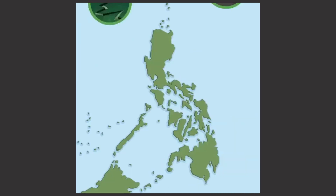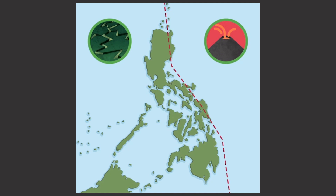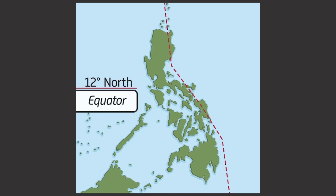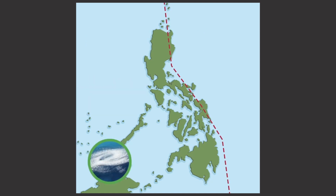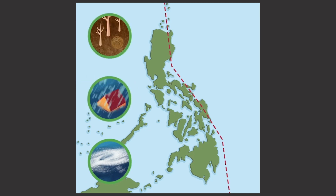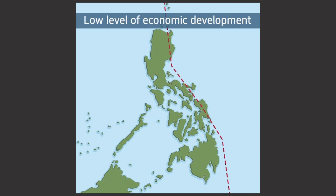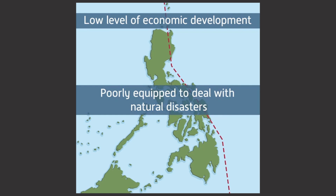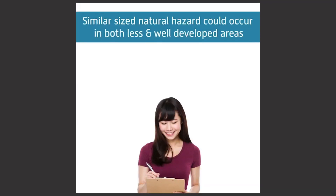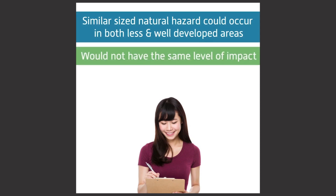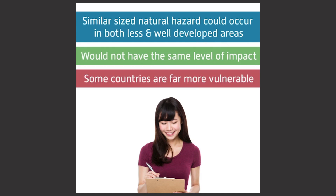The Philippines suffers earthquakes and volcanoes due to its location on a plate boundary. It's only 12 degrees north of the equator and is also subject to hurricanes. They also have floods and droughts. The Philippines also has a low level of economic development, which means it is poorly equipped to deal with natural disasters. To summarise, a similar-sized natural hazard could occur in both less and well-developed areas, but it would not have the same level of impact. This means some countries are far more vulnerable than others.